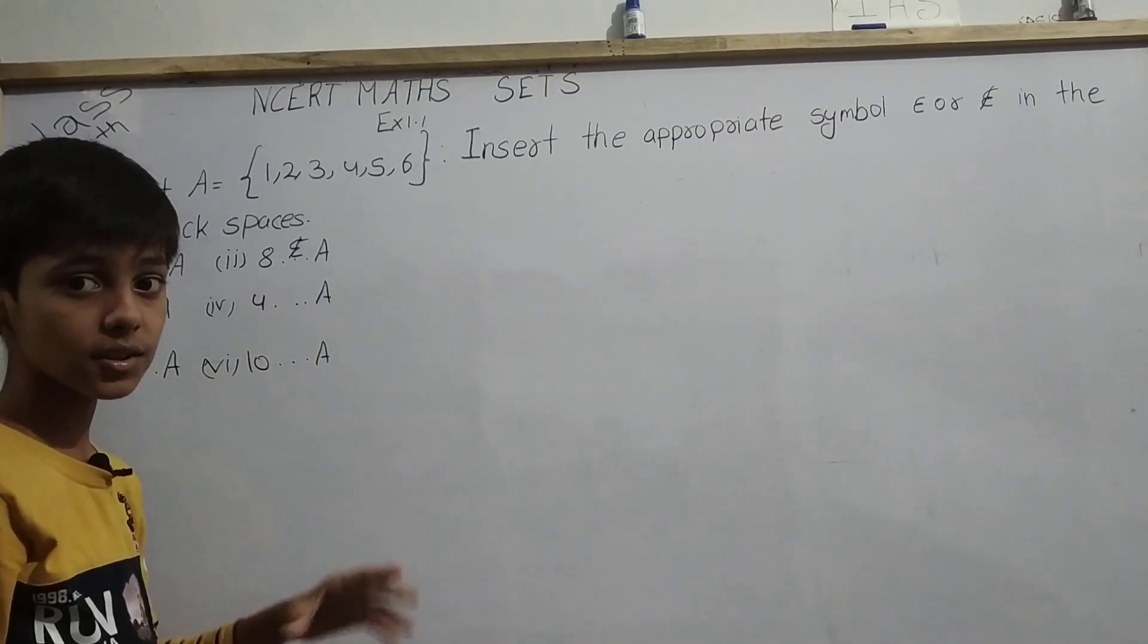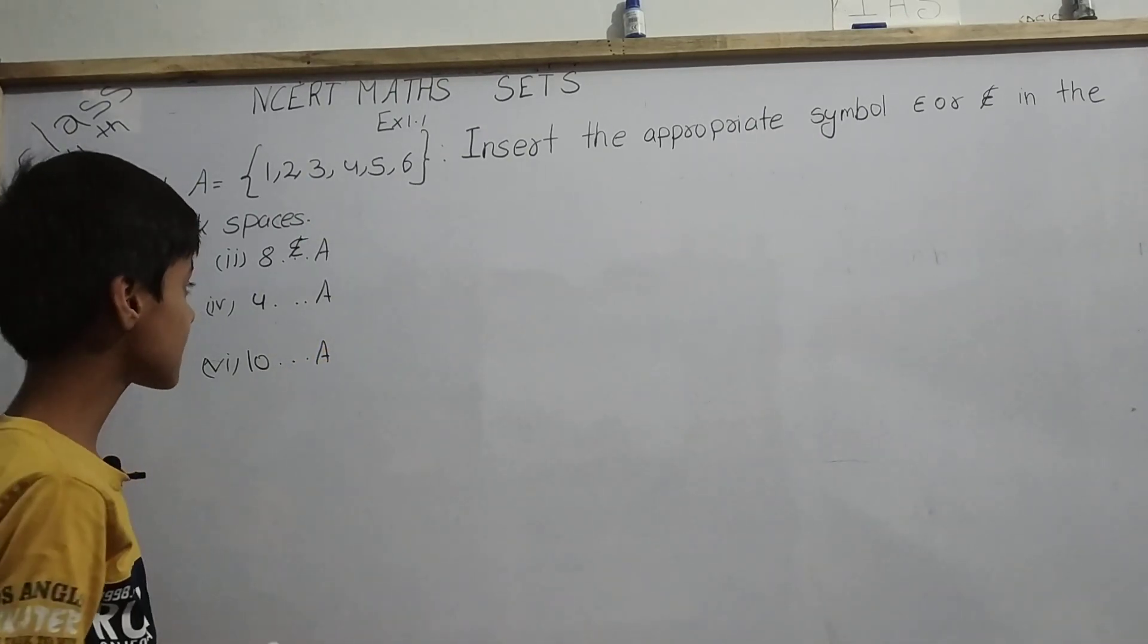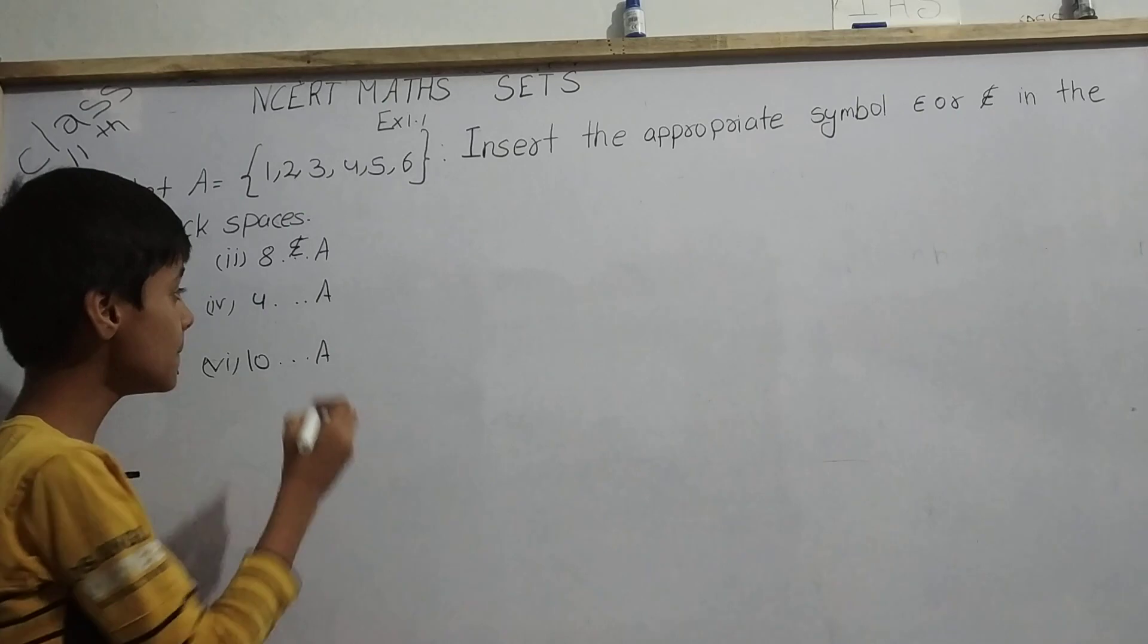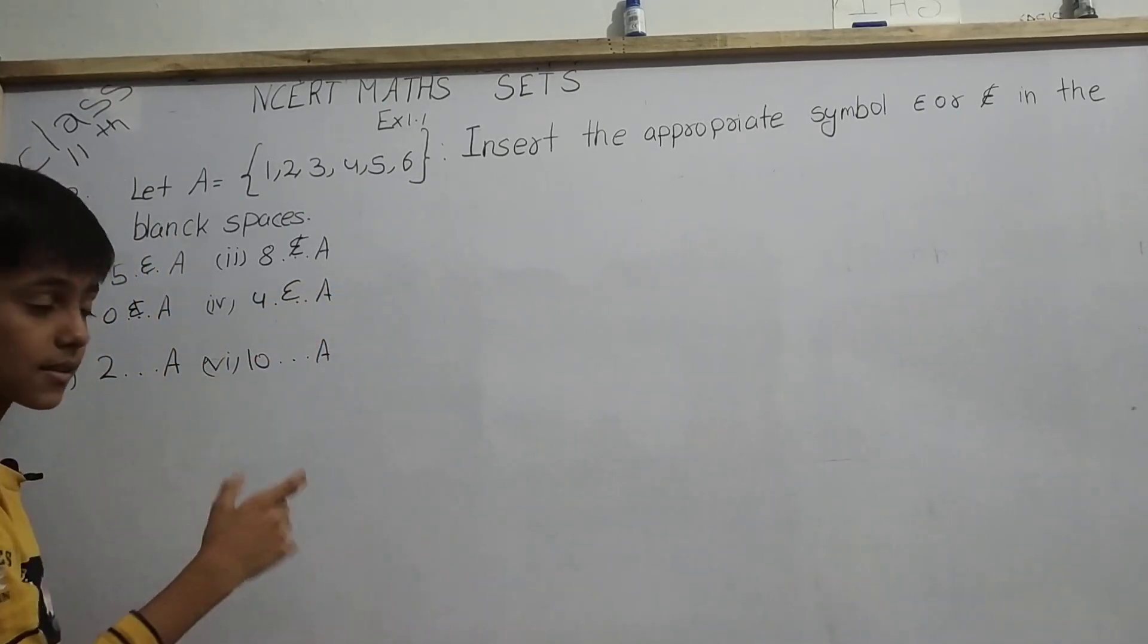If 4 is belonging to the set, we will put the symbol belongs to, which is denoted by the Greek symbol epsilon. So 4 is done. There are total 6.